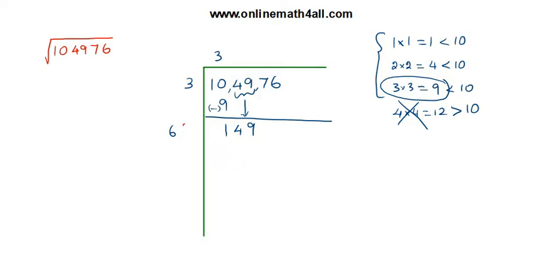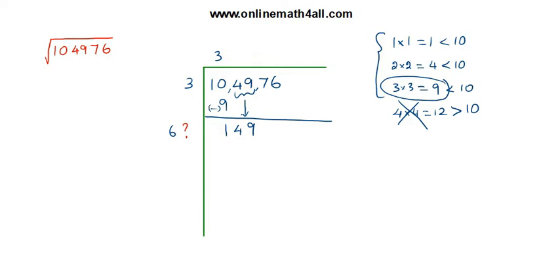Now I am putting a question mark in the quotient and in the divisor. At the place of the question mark I have to take the same number in both positions. After taking the same number, I have to multiply the two-digit divisor by that number, and the result must be equal to one hundred and forty-nine or less. For example, if I take three, I multiply sixty-three by three: three times three is nine, three times six is eighteen, giving one hundred and eighty-nine — which is greater than one hundred and forty-nine. So we should not take three.